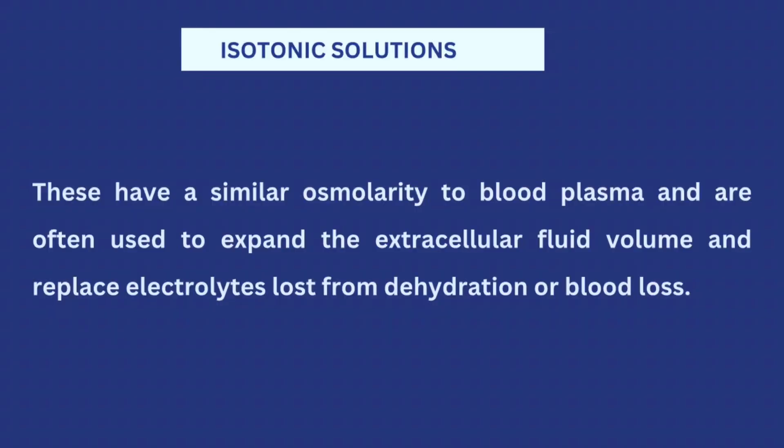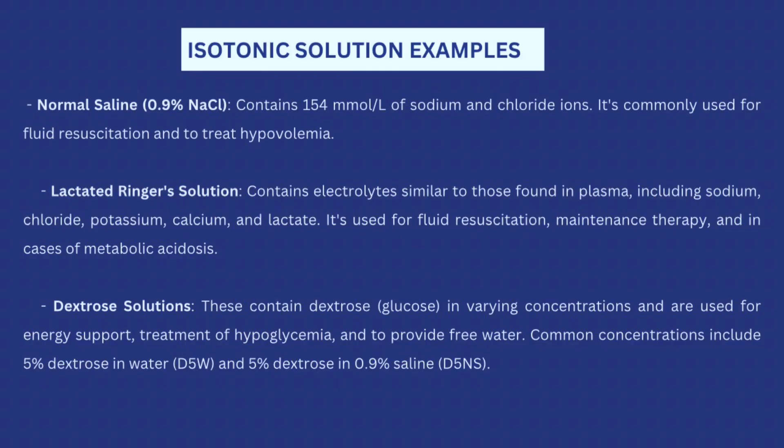The isotonic solutions have the same or similar osmolarity as the blood plasma. They are used to expand extracellular fluid volume and replace electrolyte loss from dehydration or blood loss. Common examples of isotonic solutions include normal saline — 0.9% sodium chloride — as well as Ringer's lactate and dextrose solution.